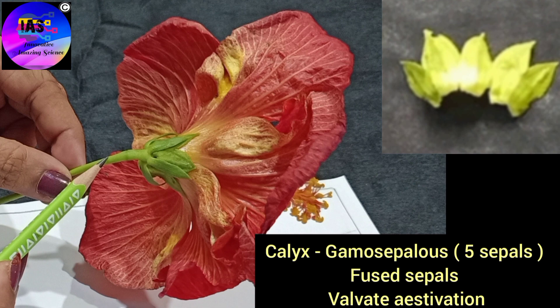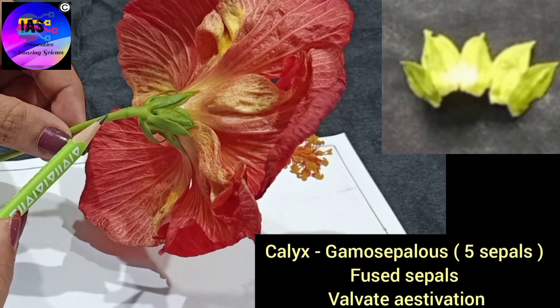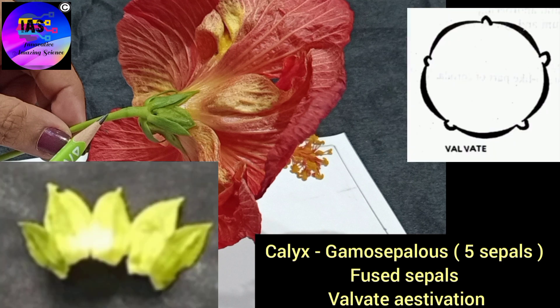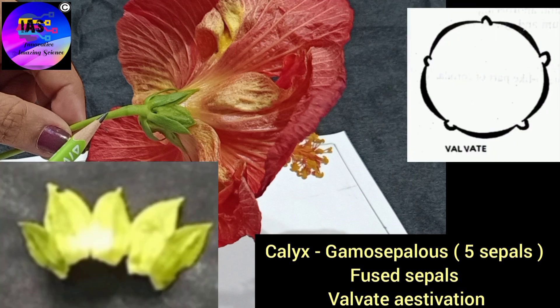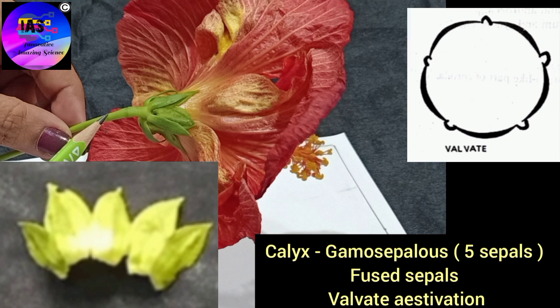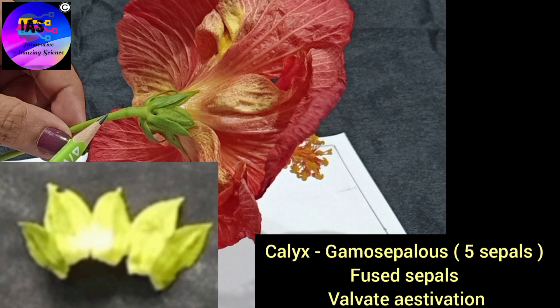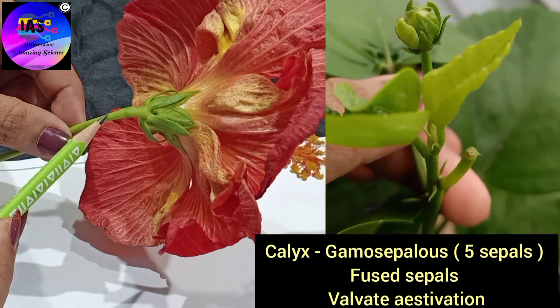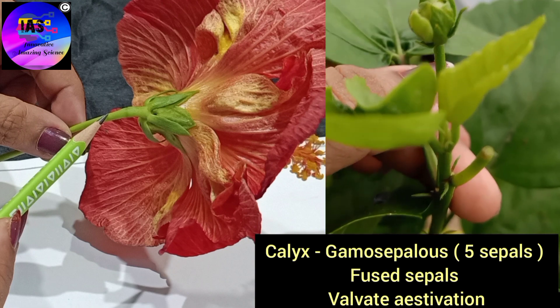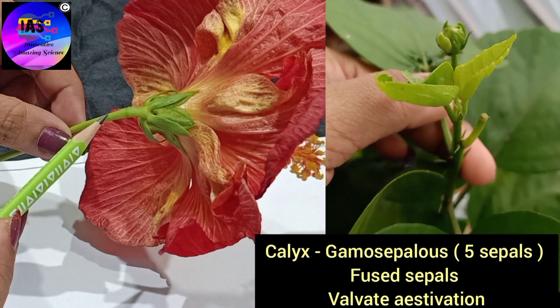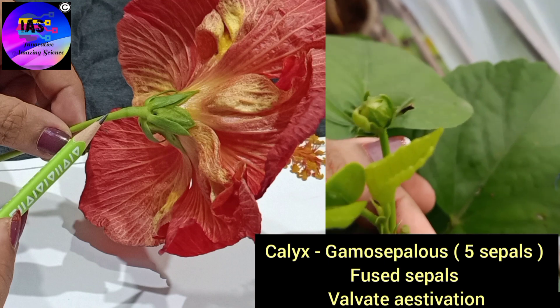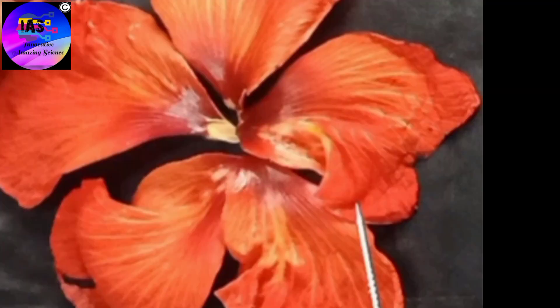If you observe carefully, the hibiscus has valvate estivation, meaning the sepals in the bud just touch one another at the margin without overlapping. The function of the sepals is to protect the flower in the bud stage, and they can also prepare food for the plant.